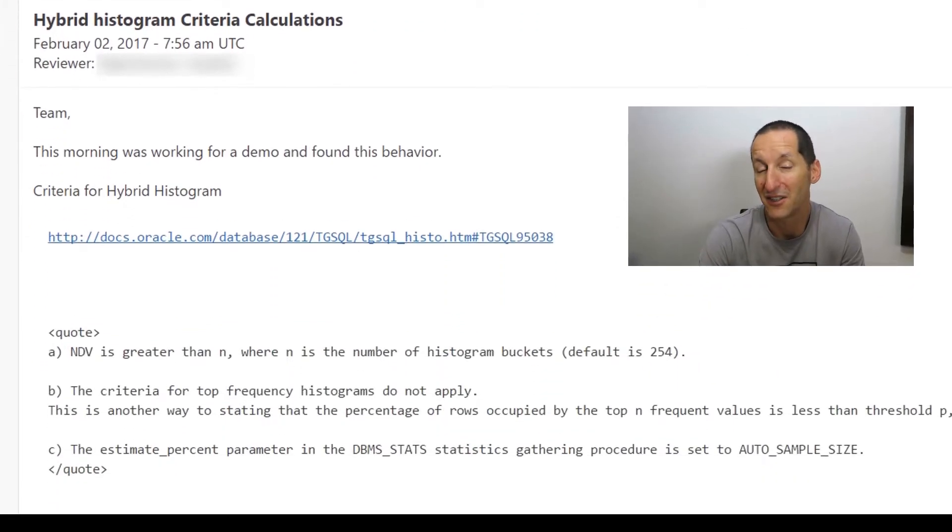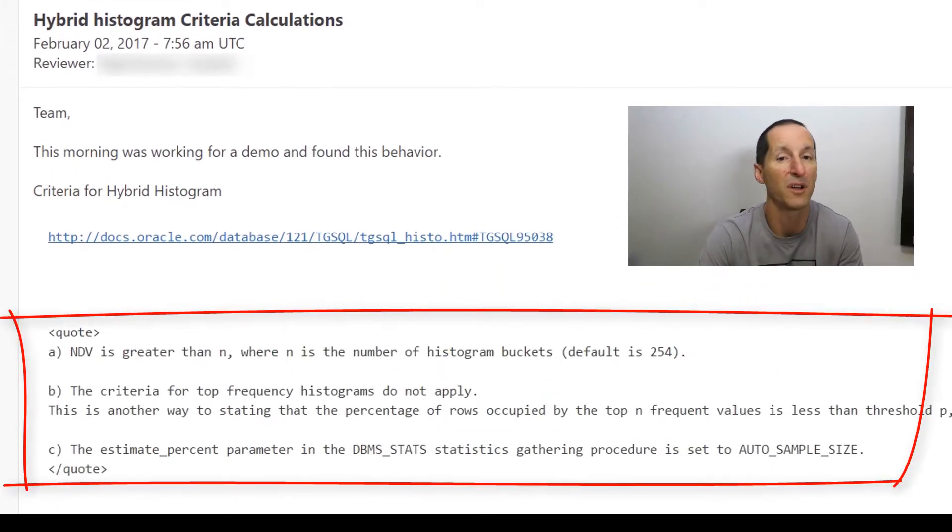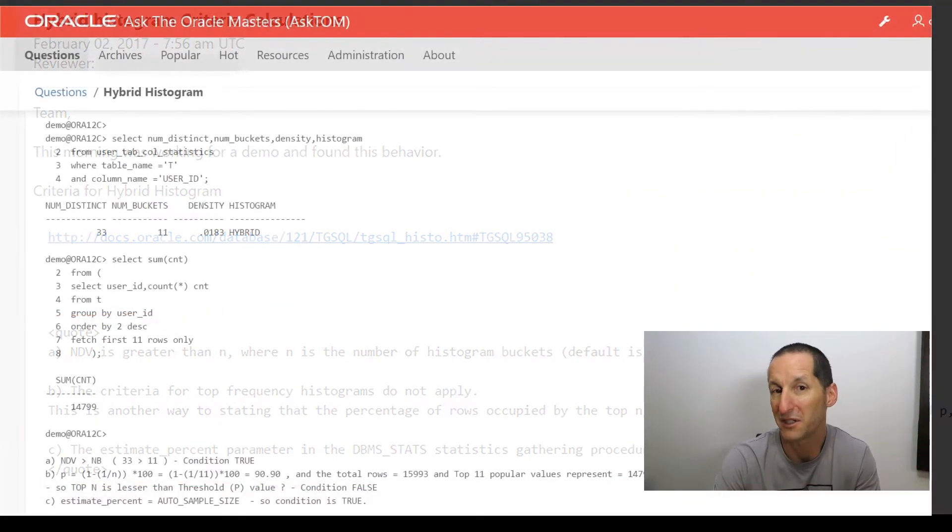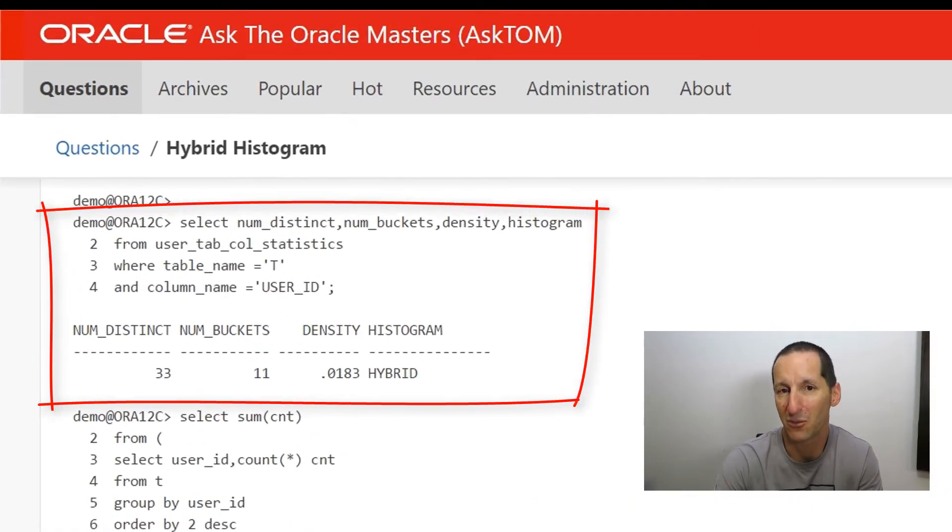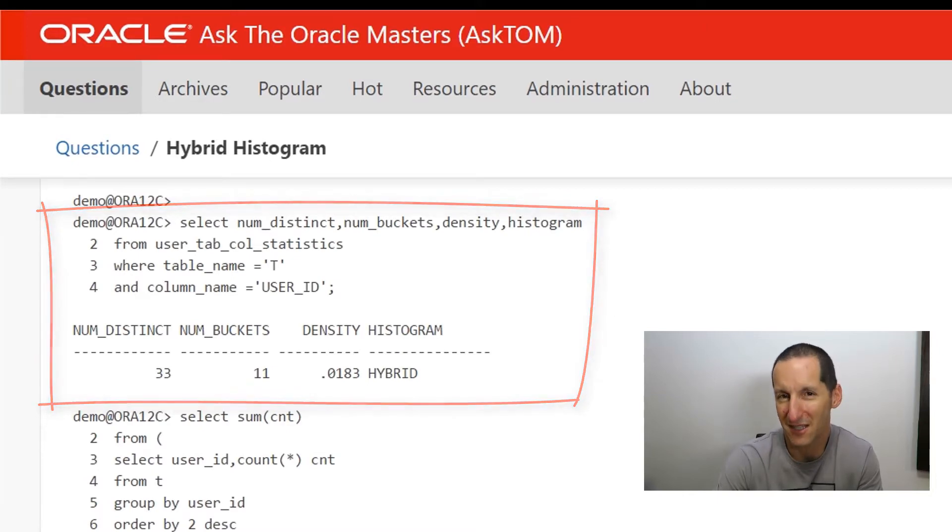Now according to the documentation you can see the rules there for what a top frequency histogram would be based on. It's all based on the number of distinct values and the fact that the vast majority of the values fall into these what I call small outline buckets. So we had an example where we thought surely a top frequency histogram would be created. We actually ended up with a hybrid histogram. So we're going to look at that Ask Tom question from a much simpler perspective as to why you might not get top frequency histograms when you expect to see them as per the documentation. Let's roll some dice.